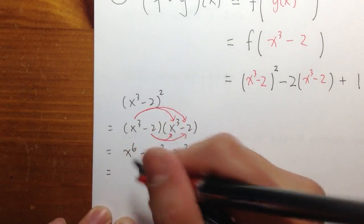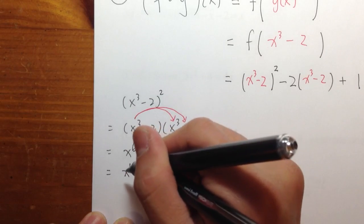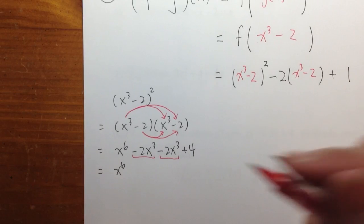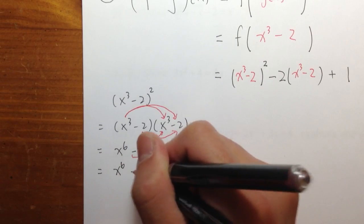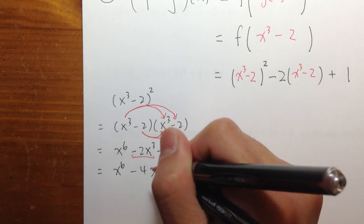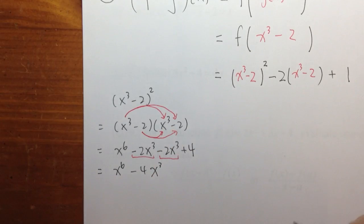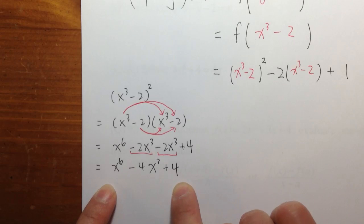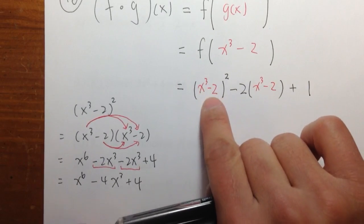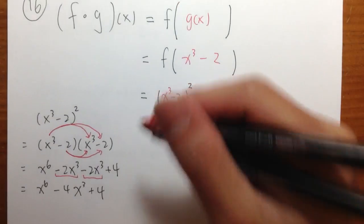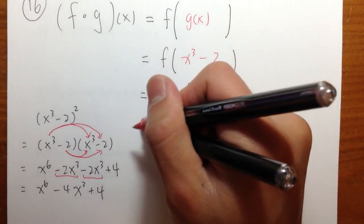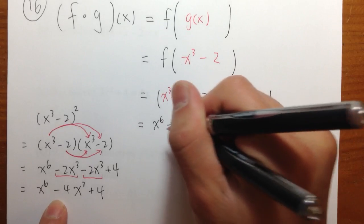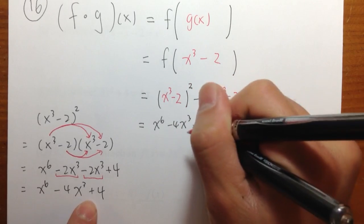We are done with the first x to the third power — move to the negative two. Multiply by x to the third power, we get minus two x to the third power. Negative two times negative two, we get plus four. So we are going to have x to the sixth power. These two terms can be combined because they both have x to the third power: negative two minus two is minus four x to the third power, plus four. So this is the result of x to the third power minus two, squared. I'm going to replace that part with x to the sixth minus four x to the third power, plus four.